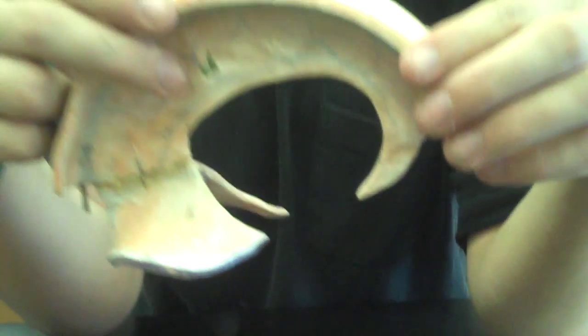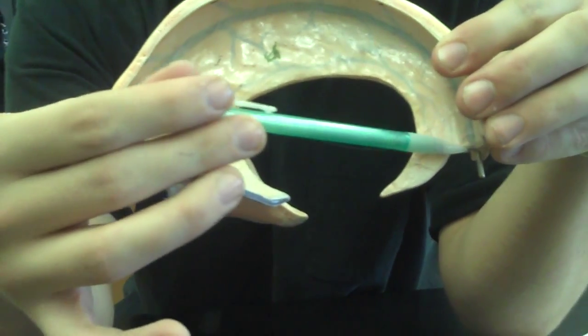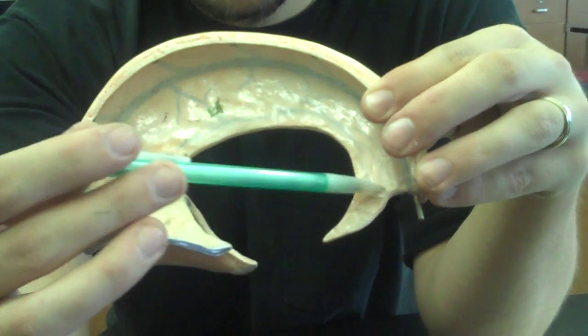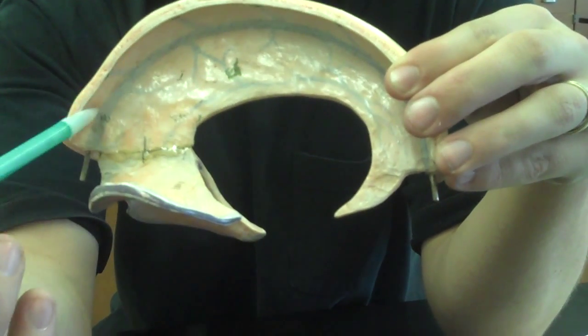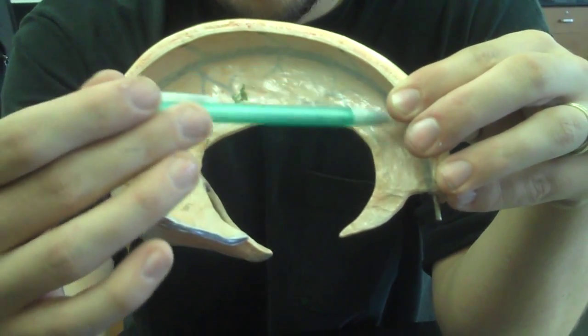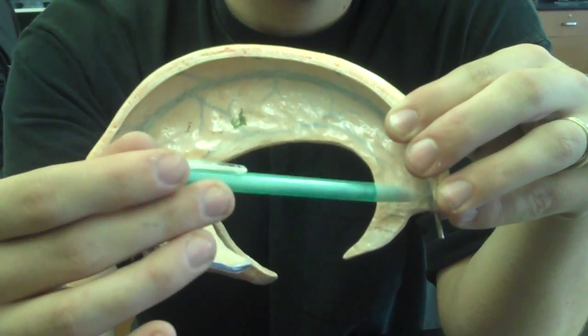And finally, we have the Superior Sagittal Sinus. If you see along the top of the Falx cerebri here, there's this blue structure. Now this model shows a blue line, but it represents a sinus that carries cerebral spinal fluid. So this right here is the Superior Sagittal Sinus.